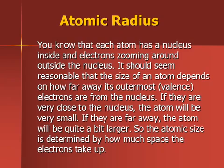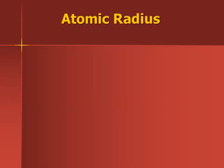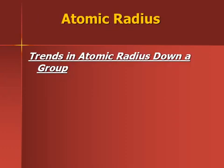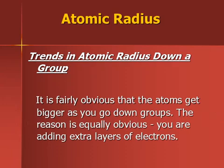Let's look at some reasons why our atoms are getting bigger going down a group. It's really a couple of things going on. We're adding more electrons, and these electrons are repelling themselves and pushing out further from the nucleus. So our trend going down a group is that atoms get larger because we're adding extra electron shells.